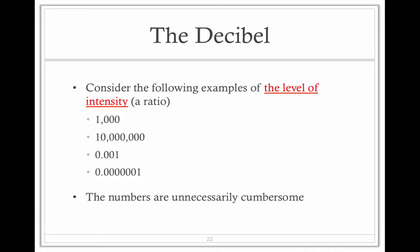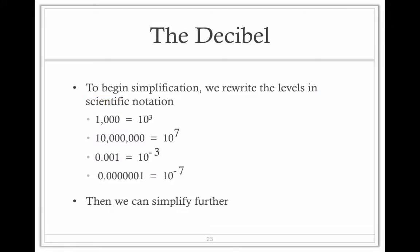We're going to talk about decibels and bells right now. So look at these numbers over here: 1,000, 10 million, 0.001, and a number that I don't know how to say. These numbers are unnecessarily cumbersome, and we spoke about this before.